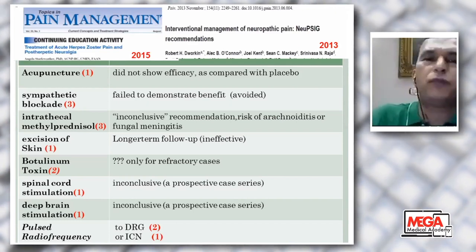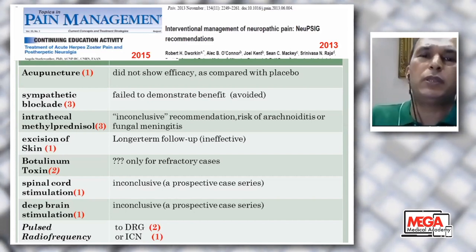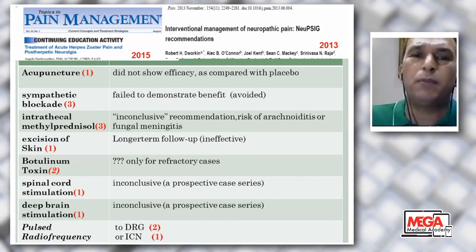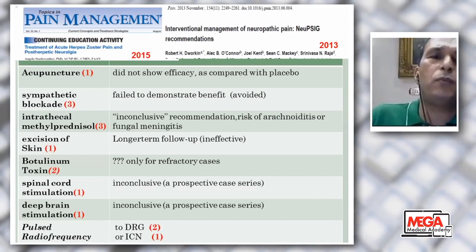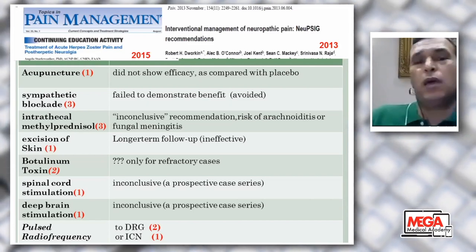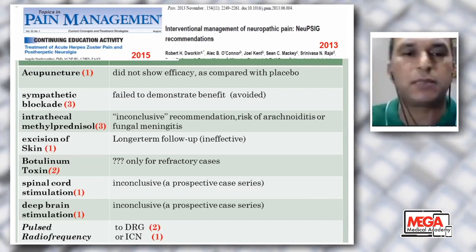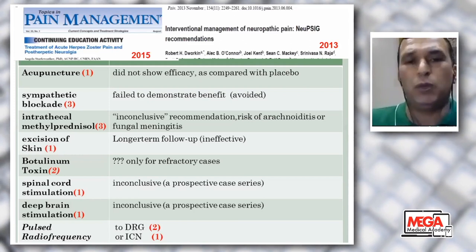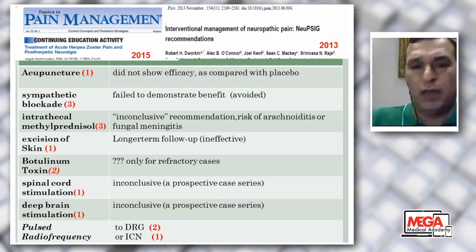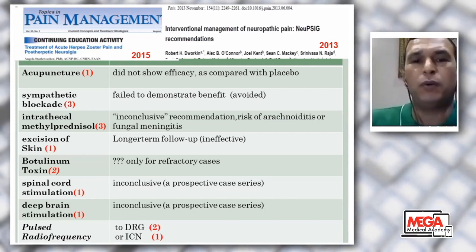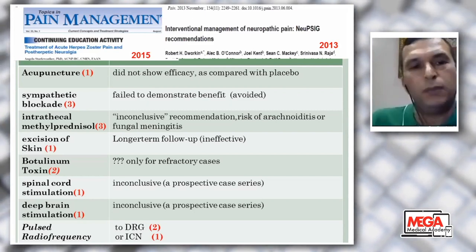The evidence for interventional therapy: acupuncture is not effective. Sympathetic blockade in already-presented cases of post-herpetic neuralgia is not effective and is better avoided. Intrathecal methylprednisolone is not effective — please avoid it, as it can produce fungal meningitis and arachnoiditis. Excision with skin grafting is not effective, but botulinum toxin can be used in refractory cases and is effective, with a duration of three to six months. Spinal cord stimulation: there is only prospective case series evidence — it is effective but its efficacy decreases with time.